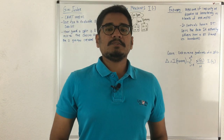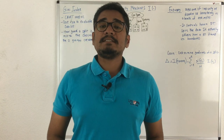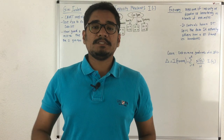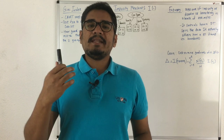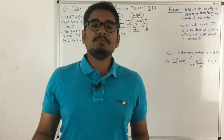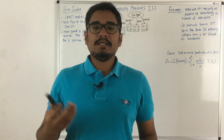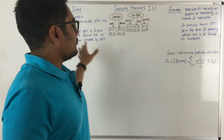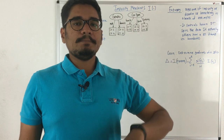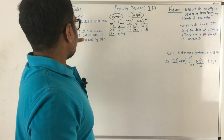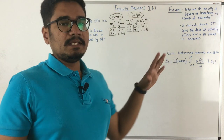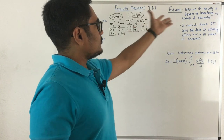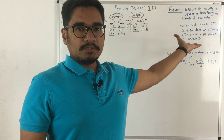Hello people, welcome back to my channel. Today let's discuss the impurity measures which are there in machine learning, and especially those used in decision tree construction. We have basically two types of impurity measures: first we have the Gini index, and then we have the entropy.